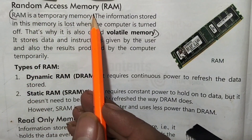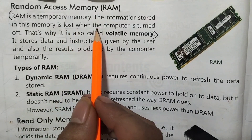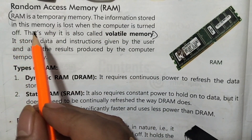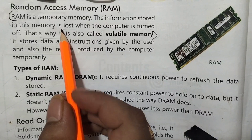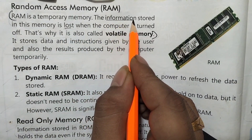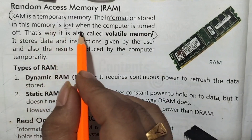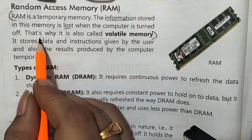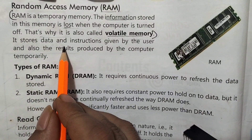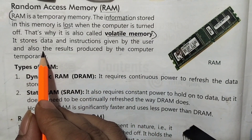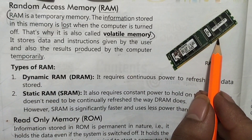RAM is a temporary memory. The information stored in RAM is lost when the computer is turned off — that is why it is called volatile memory. RAM stores data and instructions given by the user and also the results produced by the computer, but only temporarily.